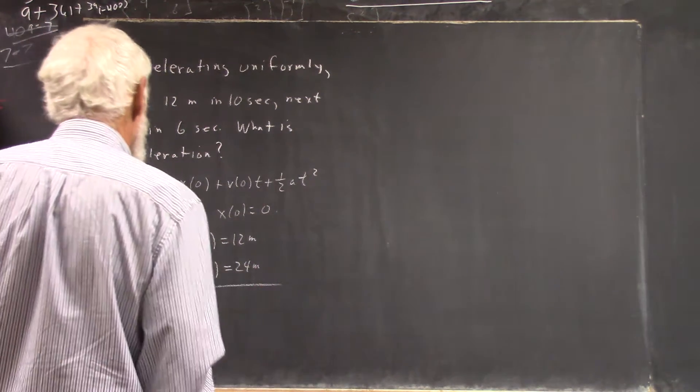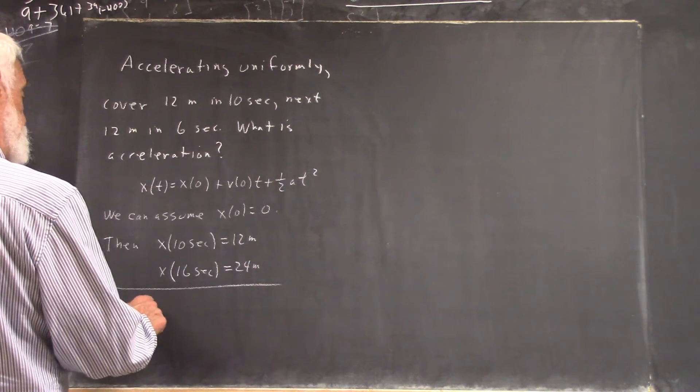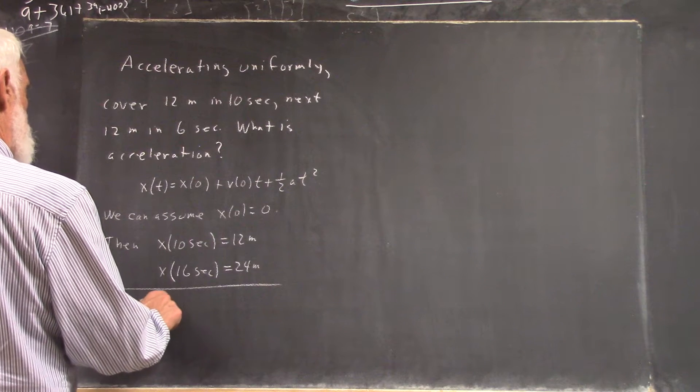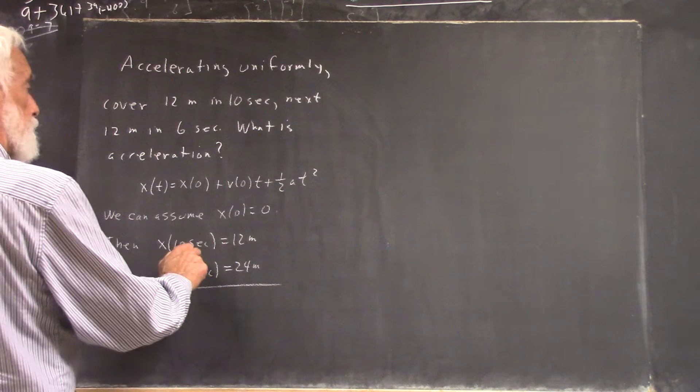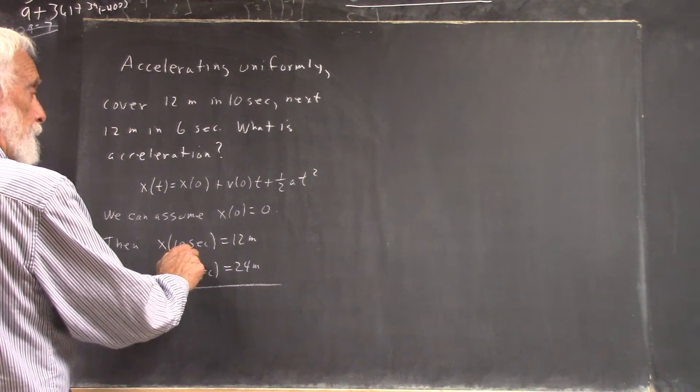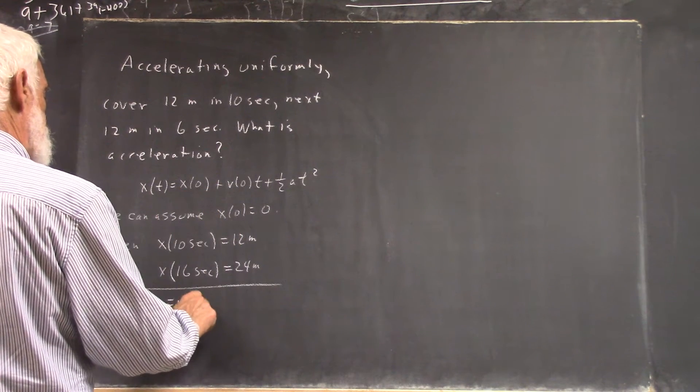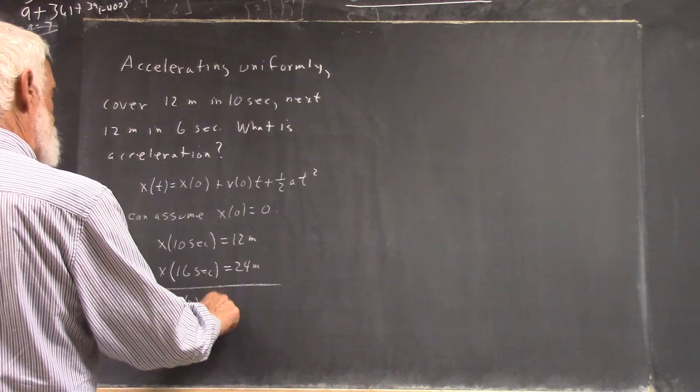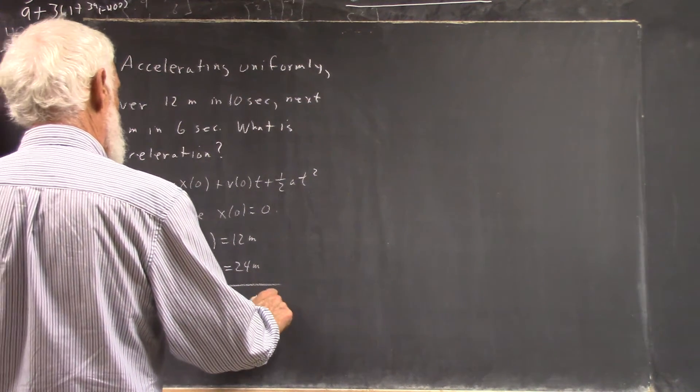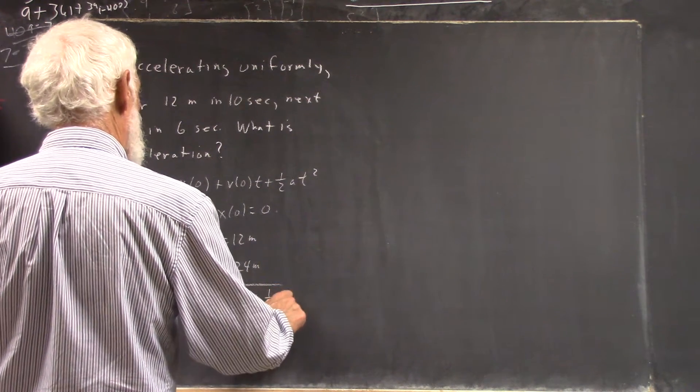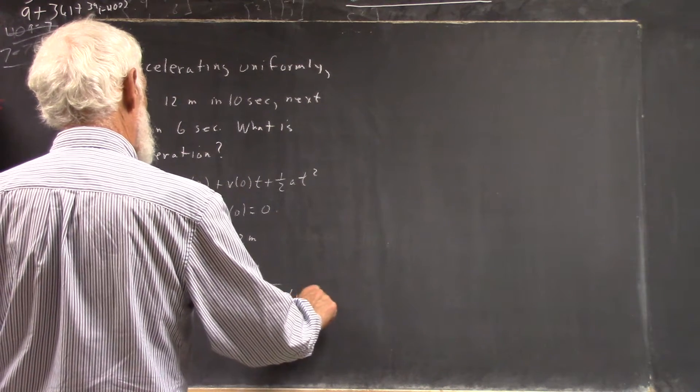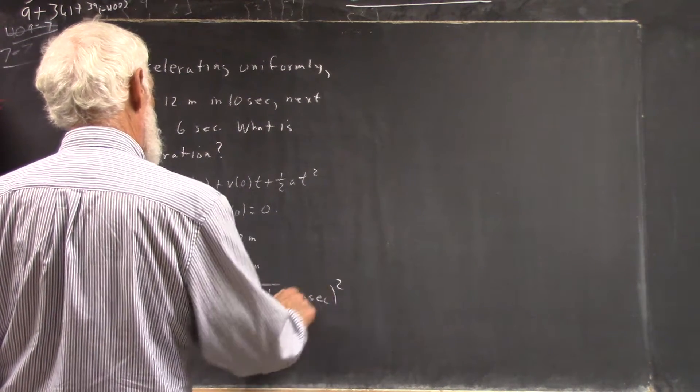Well, now all we have to do is say, okay, well then, 12 meters is x(10 seconds). x(0) is 0, so we have 12 meters equals v(0) times 10 seconds plus 1/2 a times 10 seconds quantity squared.